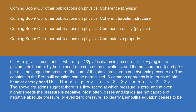H = z + p/(ρg) is the piezometric head or hydraulic head — the sum of the elevation z and the pressure head. And p₀ = p + q is the stagnation pressure — the sum of the static pressure p and dynamic pressure q. The constant in Bernoulli's equation can be normalized. A common approach is in terms of total head or energy head H: H = z + p/(ρg) + v²/(2g).